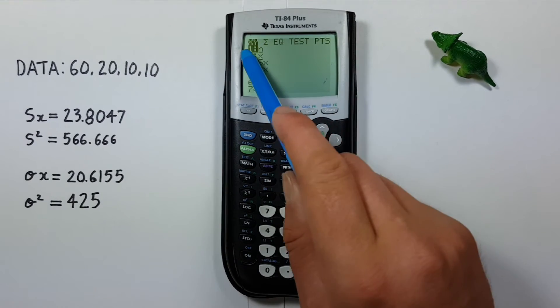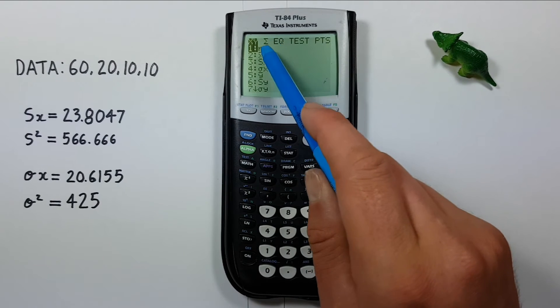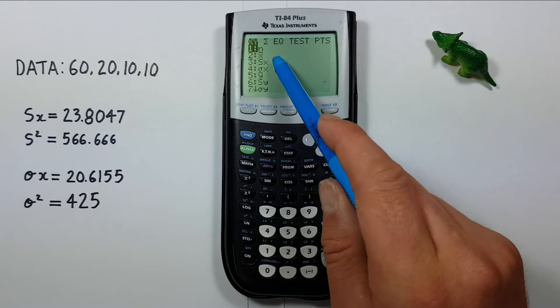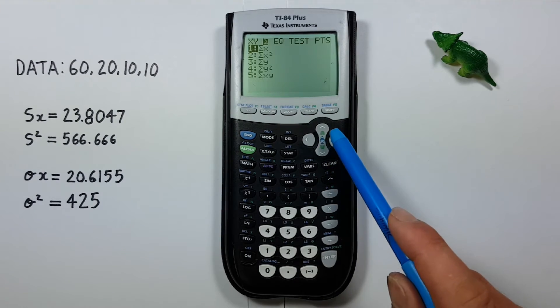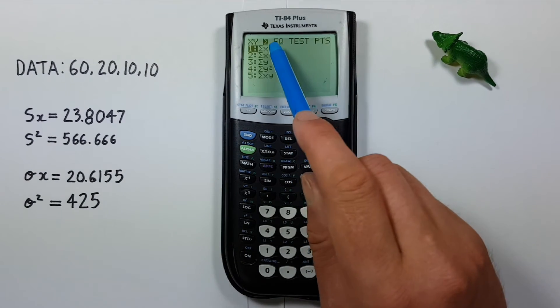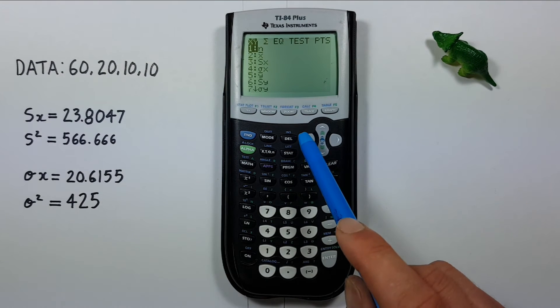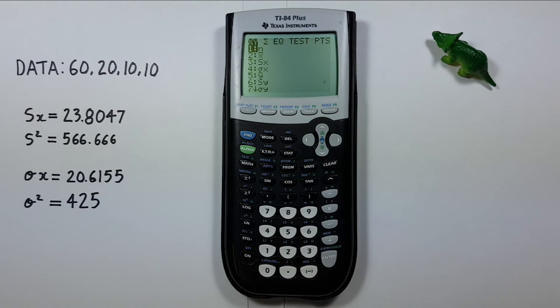That'll bring us to this menu here where we have our n, x̄, sample standard deviation, population standard deviation. And if we scroll over, our sums and sum of squares.